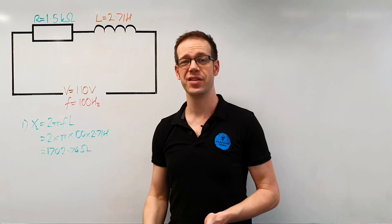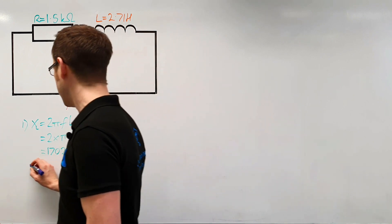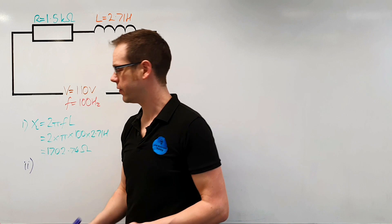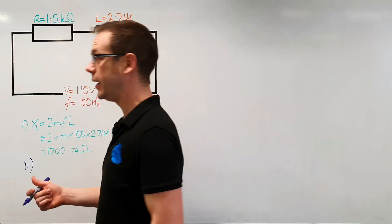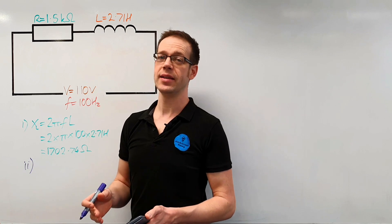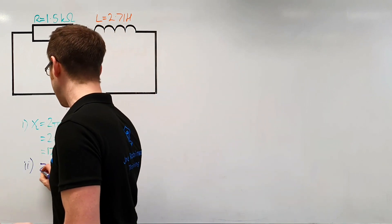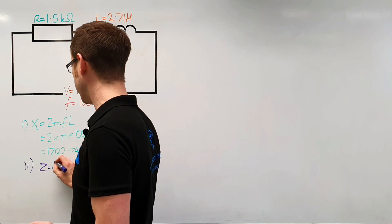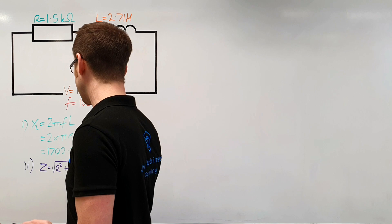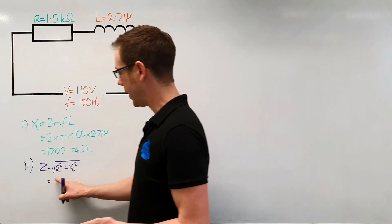The second part of the question asks us to find the total impedance for the circuit. We know that the impedance, the inductive reactance and the resistance in an AC circuit are related to each other via Pythagoras' theorem. So we know that Z, which is the impedance, will be equal to the square root of R squared plus XL squared. It's just a matter of going through and putting the numbers in.